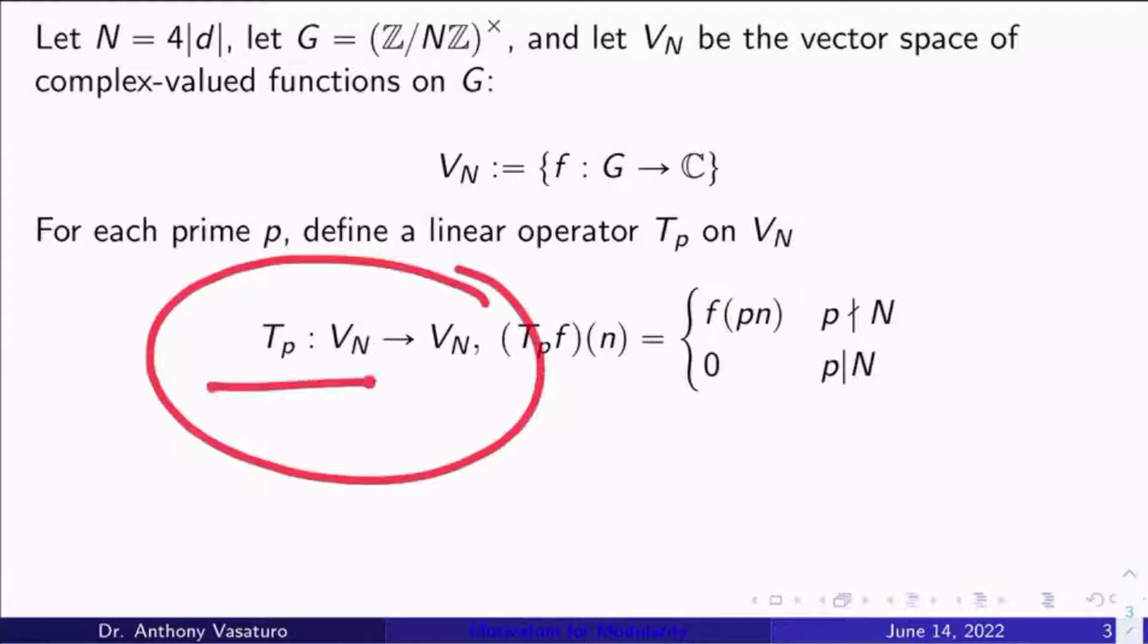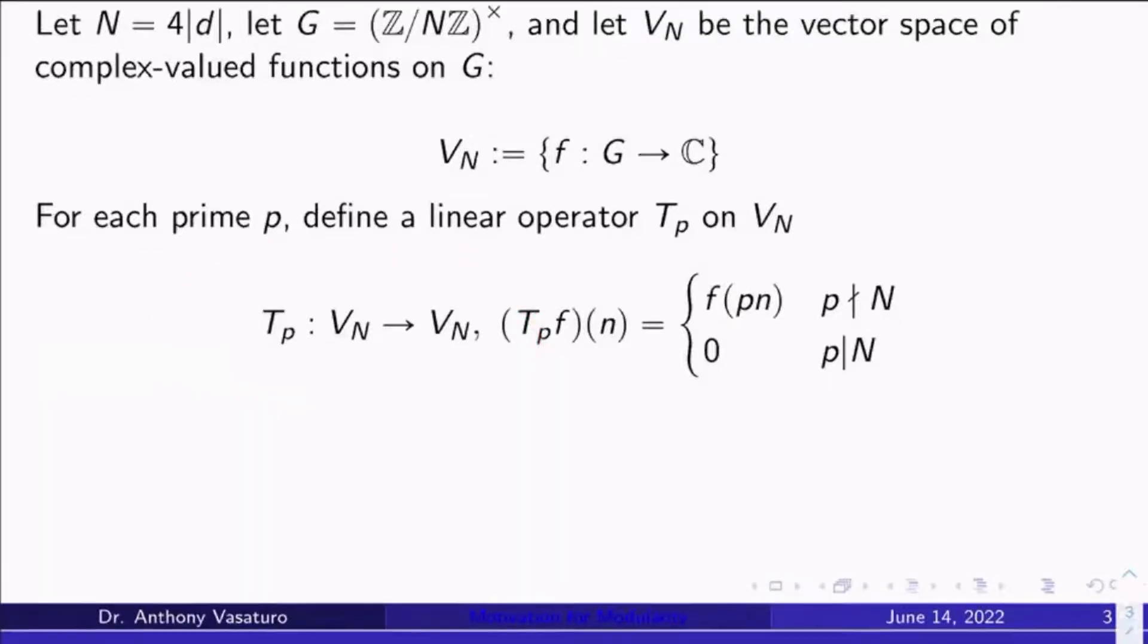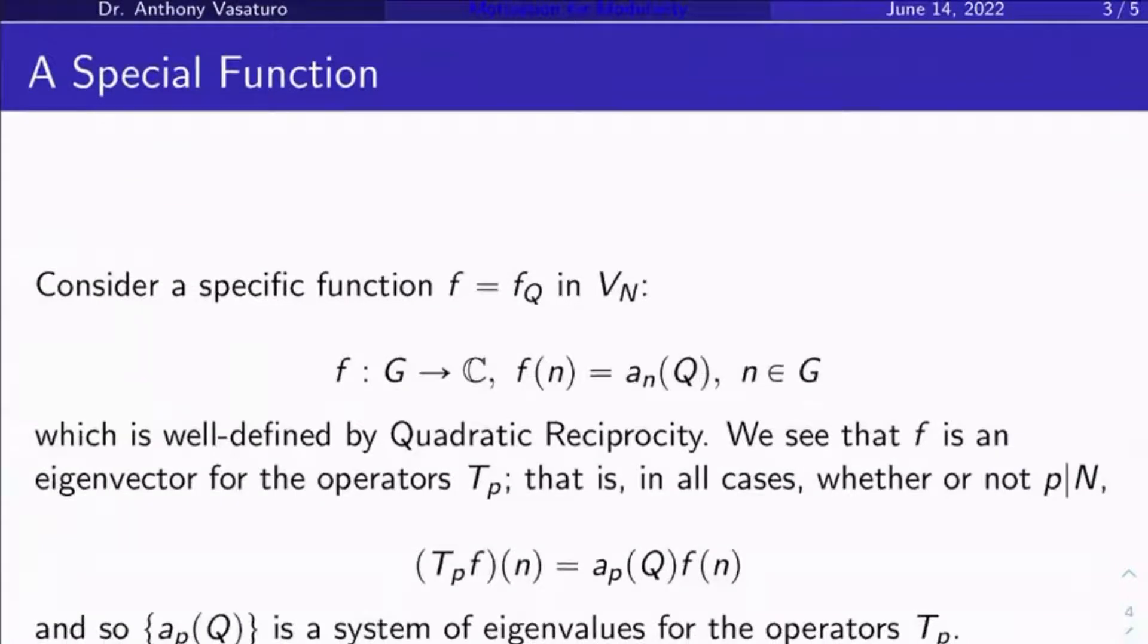Okay. Now we have these special operators on V_N. And so let's look at a certain special function inside V_N itself. I'm going to call this function f. But more precisely, it depends on the equation Q we started with. So maybe we should call it f sub Q. I'm just going to call it f. Here's what it does.